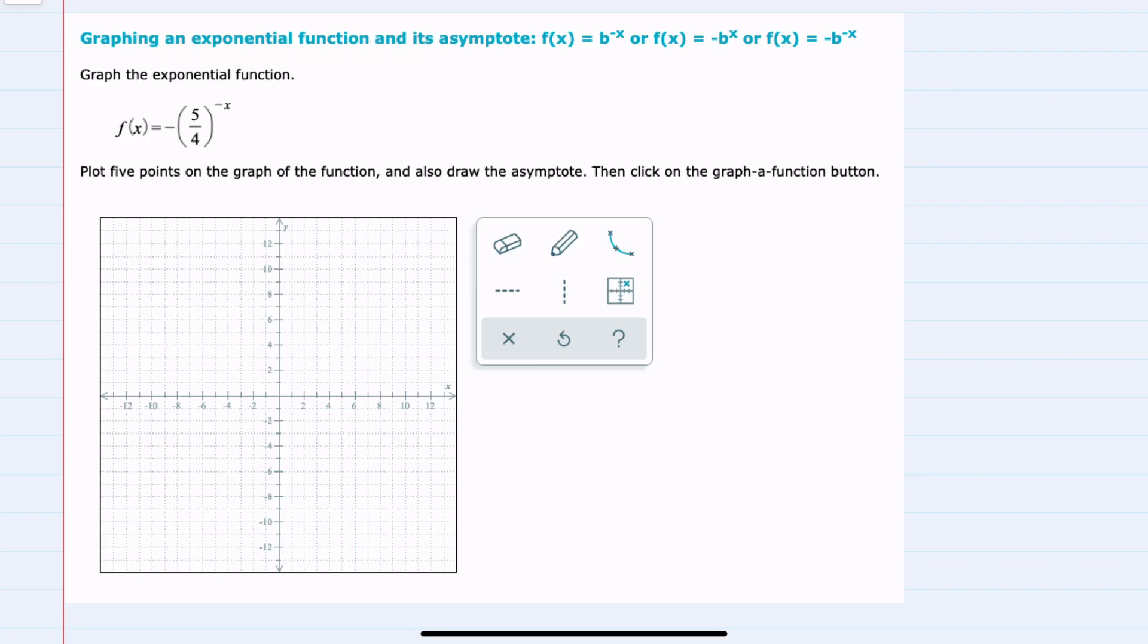In this video, I'll be helping you with the Alex problem type called graphing an exponential function and its asymptote: f(x) equals b to the negative x, or f(x) equals negative b to the x, or f(x) equals negative b to the negative x.